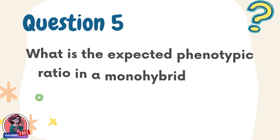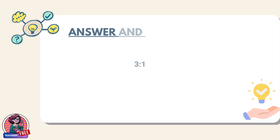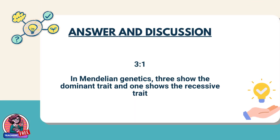Question 5. What is the expected phenotypic ratio in a monohybrid cross of two heterozygous parents? Answer: 3:1. In Mendelian genetics, 3 show the dominant trait and 1 shows the recessive trait.